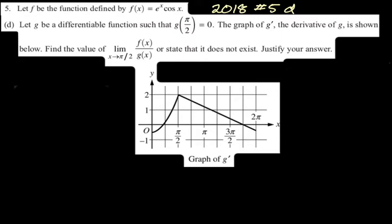Part D: Let F be the function defined by F(x) = e^x cos(x). Let G be a differentiable function such that G(π/2) = 0. Since G is differentiable, it's continuous, which means the limit as x approaches π/2 of G(x) equals 0. Find the value of the limit as x approaches π/2 of F(x)/G(x), or state it doesn't exist. Justify your answer.